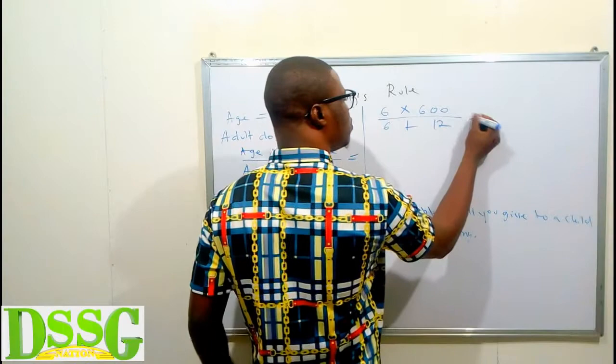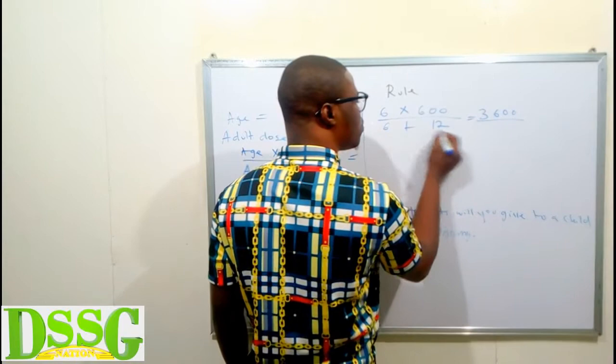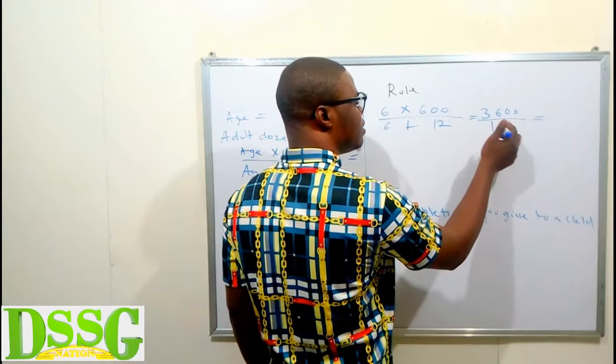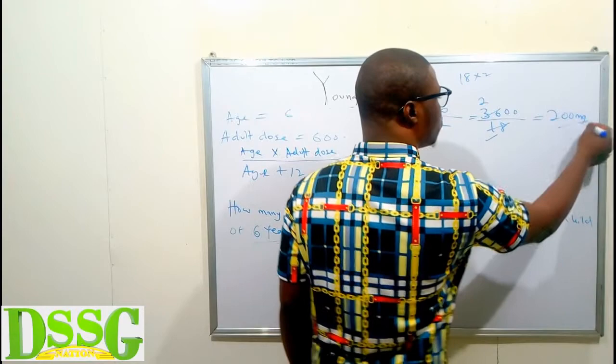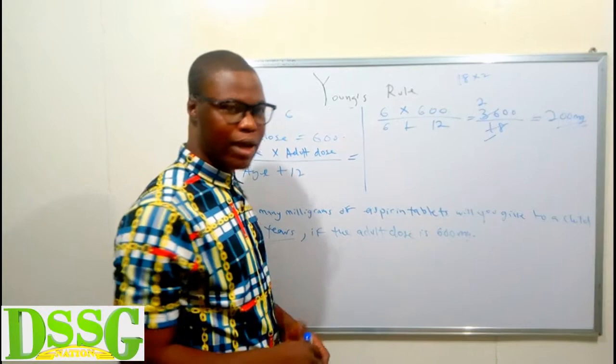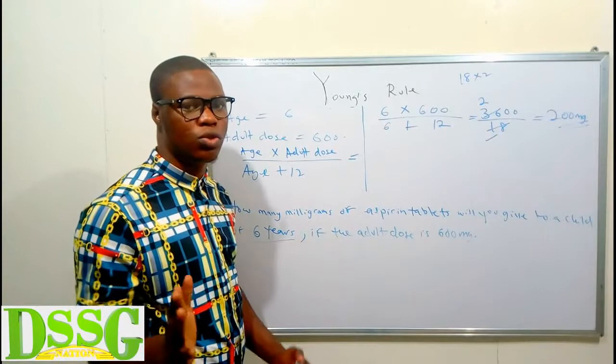So 6 multiplied by 600 gives 3600, all over 6 plus 12 which is 18. Dividing 3600 by 18 gives 200. The final answer is 200 milligrams. That is how to apply Young's Rule — if the age is between 1 to 12 years, bring in the parameters and solve using the formula.